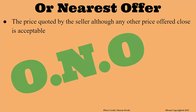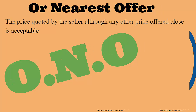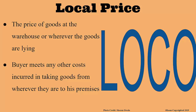We also have other terms used in home trade that you need to know about. They are used to specify the portion of expenses in a transaction to be paid by the seller or the buyer. The first one is called 'or nearest offer,' ONO for short. It means that there is a particular quoted price but one can offer a price that is close to it and it will be acceptable. The other one is called local price, or loco. This refers to the price of goods at the warehouse or wherever the goods are lying. Any other cost the buyer will incur, like transportation cost, is squarely on the buyer himself.